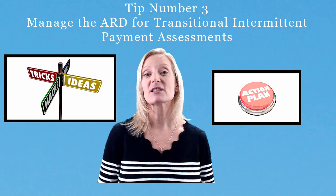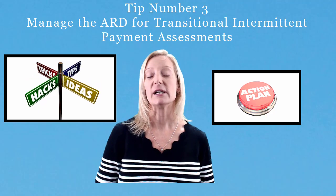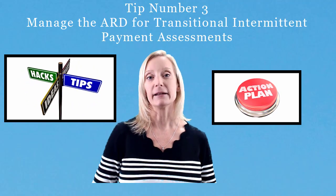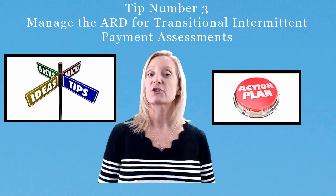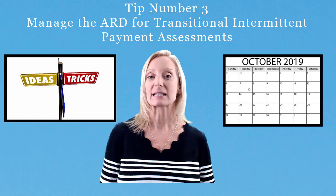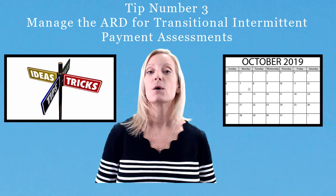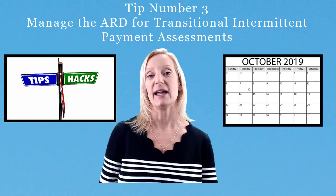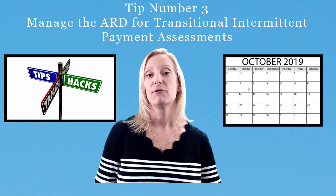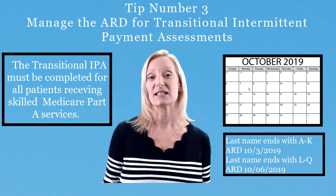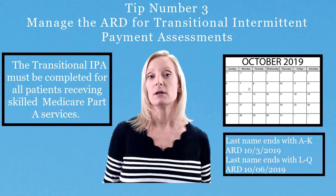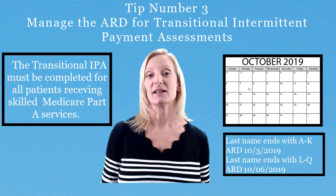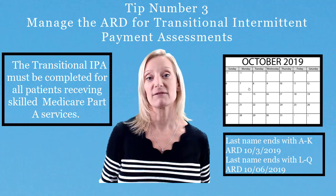My third and final tip for this week is to consider developing a plan for those transitional intermittent payment assessments. We're only going to have the transitional IPAs for the first seven days of October — day one through day seven — and you can set your assessment reference date.